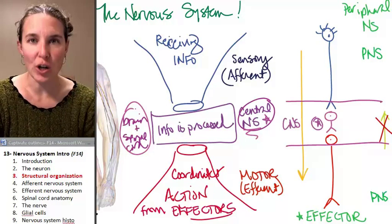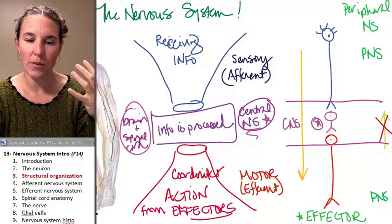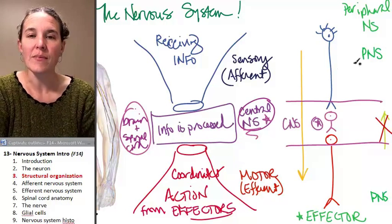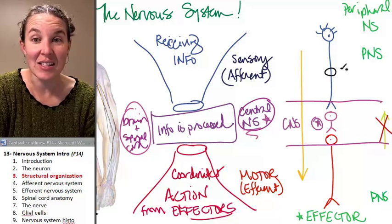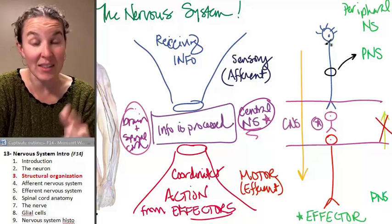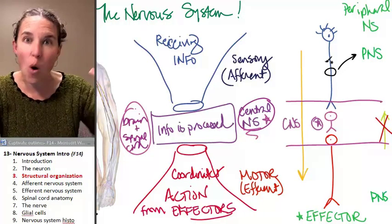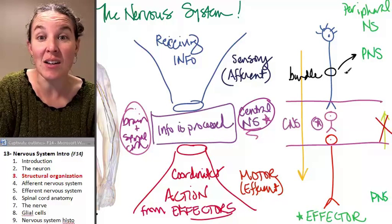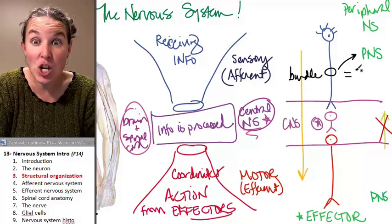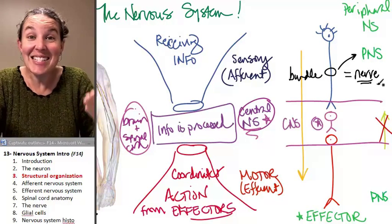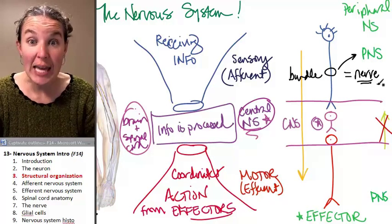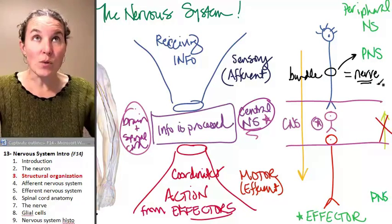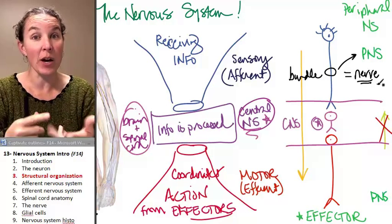There are some terms that hopefully will trigger prior knowledge. First, a bundle of axons in the peripheral nervous system — not just one axon. If we take a whole bunch of neurons and bundle them together, a bundle of axons in the peripheral nervous system is a nerve. That's the definition of a nerve: a bundle of axons traveling through the peripheral nervous system, outside the brain or the spinal cord.